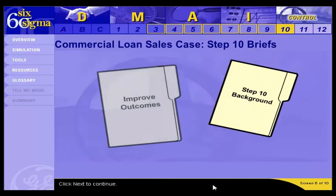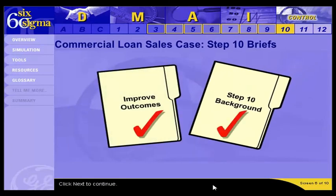That concludes your briefing. To validate a measurement system, you should use the same process that you learned in Step 3. The key difference is that in Step 3 the Y was measured, while in Step 10 it is the X being measured.